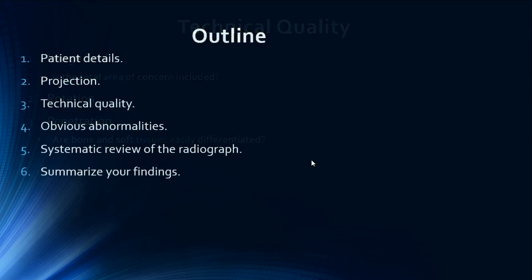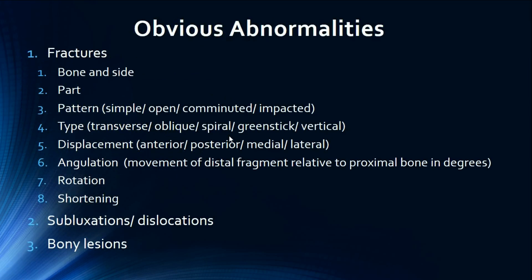Then we look at any obvious abnormalities in the radiograph. The most important obvious abnormalities are: first, fractures; second, subluxations or dislocations; and finally, any obvious bony lesions.